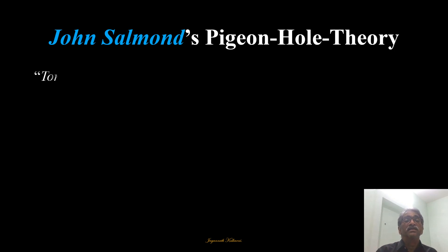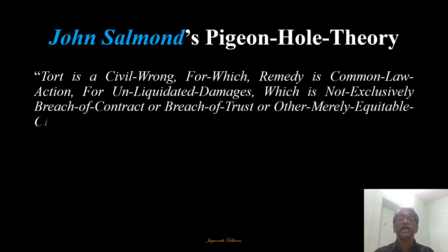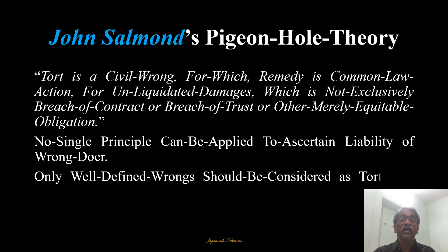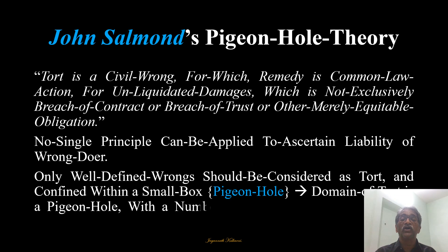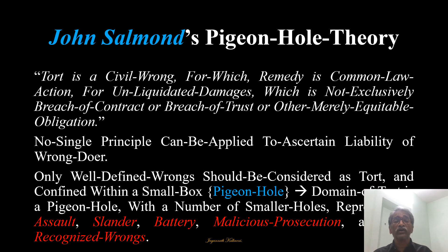Salmond also said that tort is a civil wrong for which the remedy is a common law action for unliquidated damages, which is not exclusively breach of contract, breach of trust, or other merely equitable obligation. He also said there is no single principle that can be applied to ascertain the liability of a wrongdoer — no single formula for liability fixation. Only well-defined wrongs defined in tort should be considered as tort, confined within a small box — assault, slander, battery, malicious prosecution, or any recognized wrong placed in a small box just like the pigeon hole.